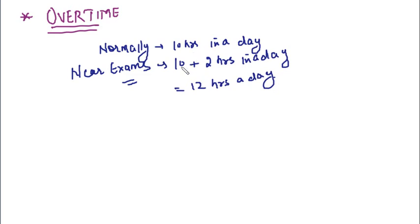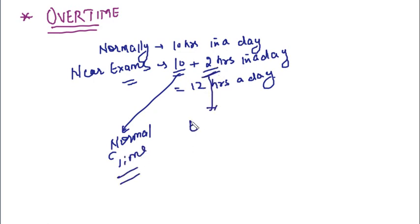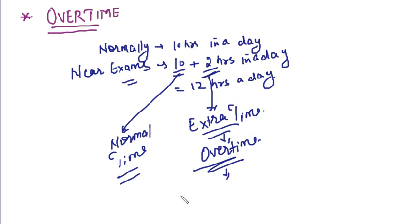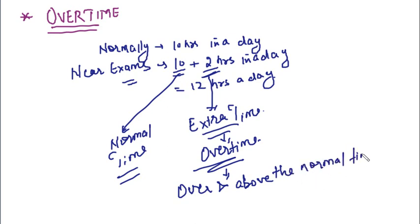So these 10 hours are your normal time — because you study 10 hours in a normal routine. These extra 2 hours you study are called overtime. Overtime means over and above the normal time. Normally you study 10 hours in a day; the 2 extra hours is known as overtime. Any time spent over and above the normal time is known as overtime.